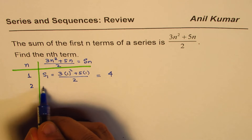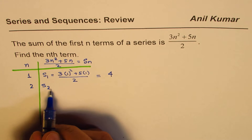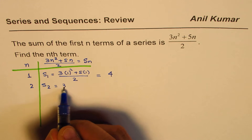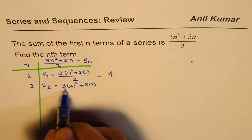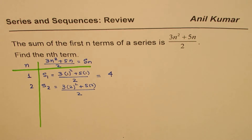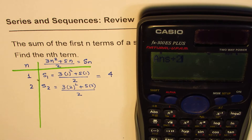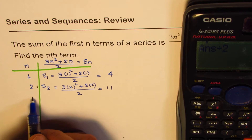Now for n = 2, this is the sum of 2 terms, not the second term. It equals 3 times 2 squared plus 5 times 2, divided by 2. Let's use a calculator. 3 times 4 is 12, plus 10 equals 22, divided by 2 gives us 11. So the sum of the first 2 terms is 11.